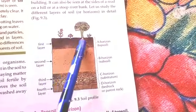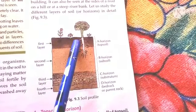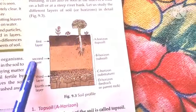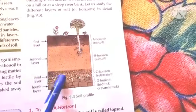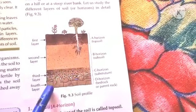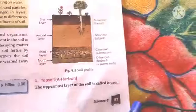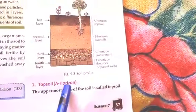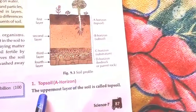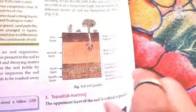The first layer contains plants and humus, the second layer is sub-soil, and so on. The uppermost layer of the soil is called topsoil, which is also called the A-horizon.